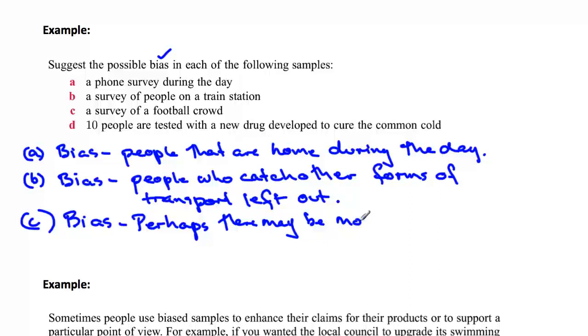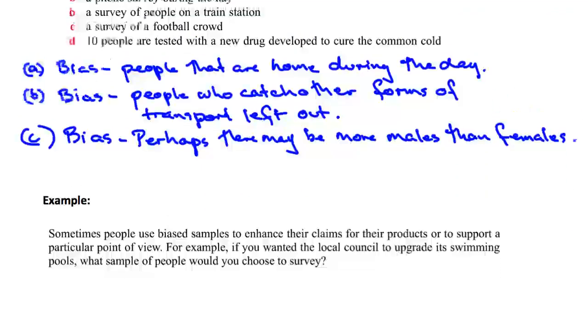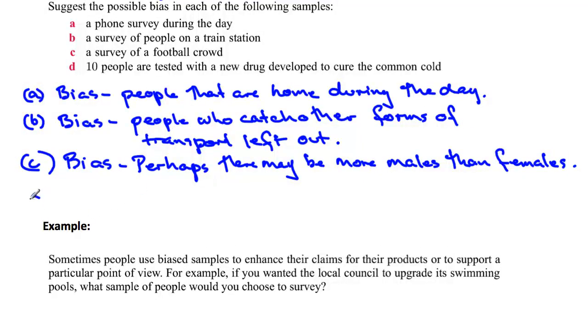Which traditionally, that's the way it's been—more males are involved with sporting events like this than females, although that's changing over time. Let's have a look at the last one. Ten people are tested with a new drug developed to cure the common cold. The bias simply is here that this sample is not big enough. This is not a large enough sample to draw conclusions.